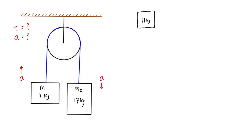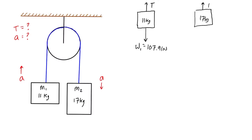For mass 1 at 11 kilograms, we have weight W1 acting downward and tension acting upward. W1 = 9.81 × 11 = 107.91 newtons. For mass 2 at 17 kilograms, we also have tension acting upward and weight W2 acting downward. W2 = 17 × 9.81 = 166.77 newtons.